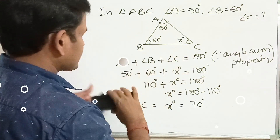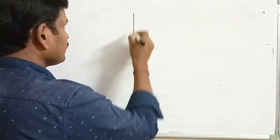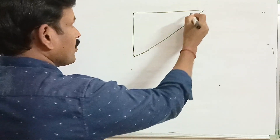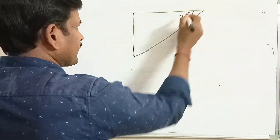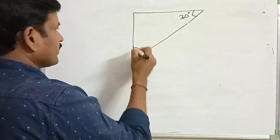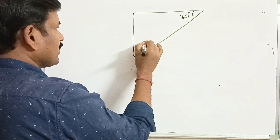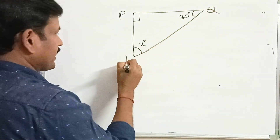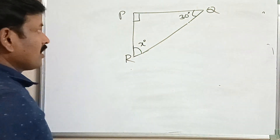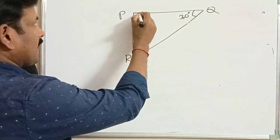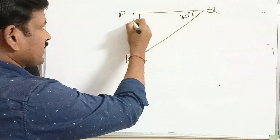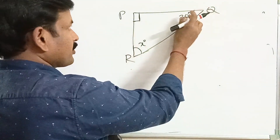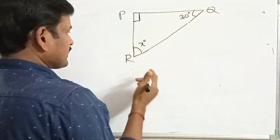Let us move on to the next example. In a right-angle triangle, one acute angle measures 30 degrees. Find the other acute angle. In right-angle triangle PQR, angle P measures 90 degrees and angle Q is 30 degrees. Find angle R.